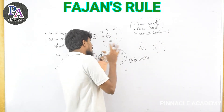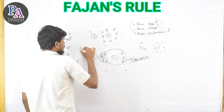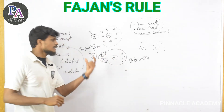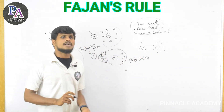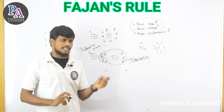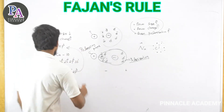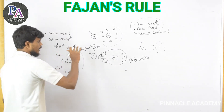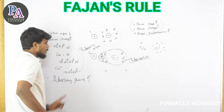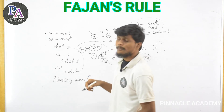The polarizing power of the cation determines how much the anion is polarized. A higher polarizing power means greater polarization. The polarizability of the anion also matters — a larger, more diffuse electron cloud is more easily polarized. These two factors — polarizing power of the cation and polarizability of the anion — are central to Fajans Rule.